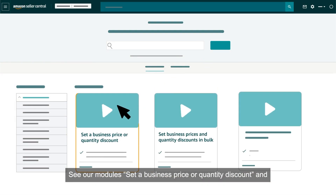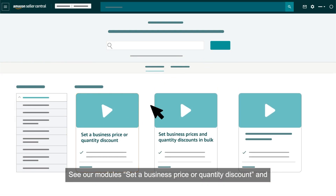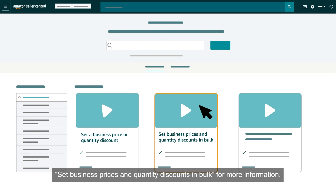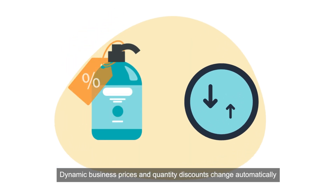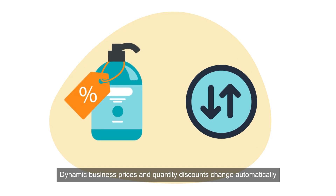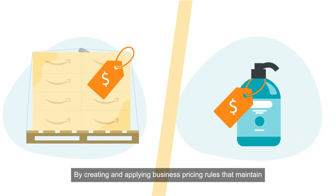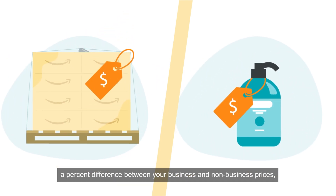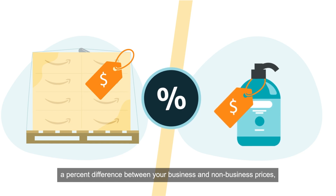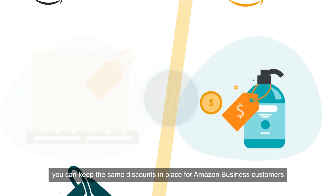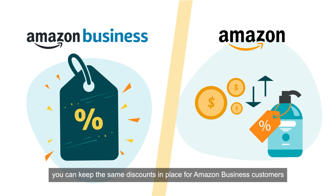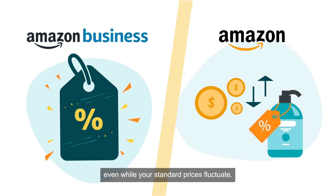See our modules Set a Business Price or Quantity Discount and Set Business Prices and Quantity Discounts in Bulk for more information. Dynamic business prices and quantity discounts change automatically in response to changes in your standard prices. By creating and applying business pricing rules that maintain a percent difference between your business and non-business prices, you can keep the same discounts in place for Amazon business customers even while your standard prices fluctuate.